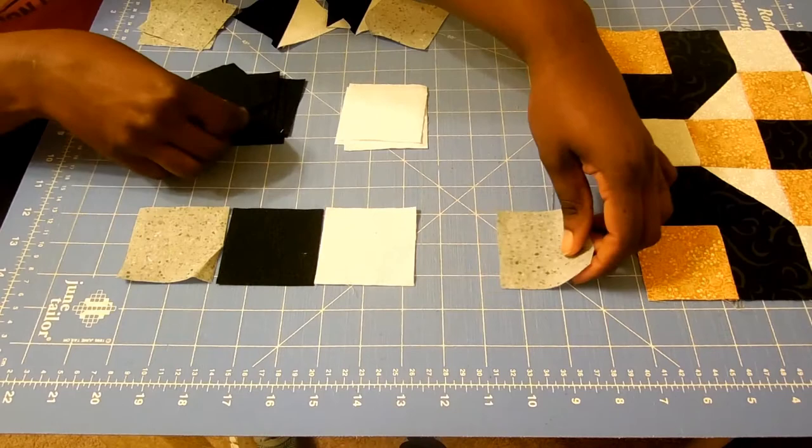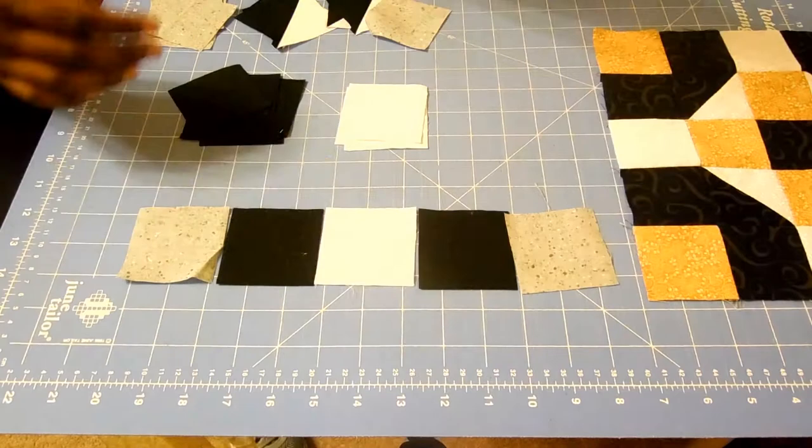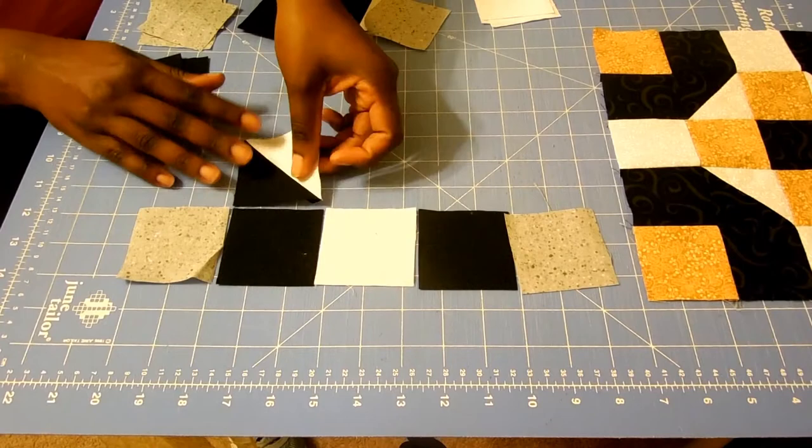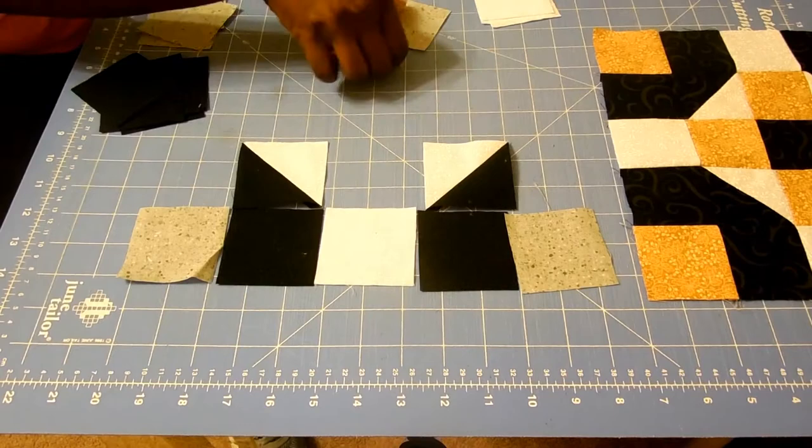For the half square triangle units, you want to make sure that your black is facing out. Like that, you want to have black to black. And then here, and so on. I'm going to finish laying this out and then I'll get ready to sew.